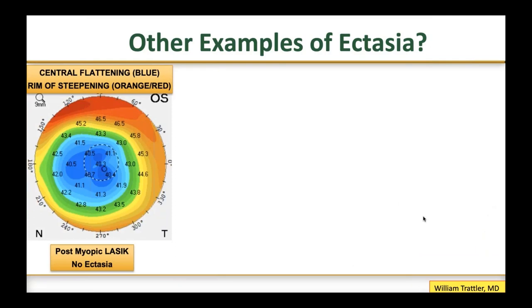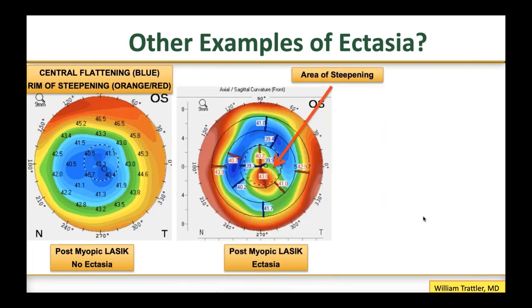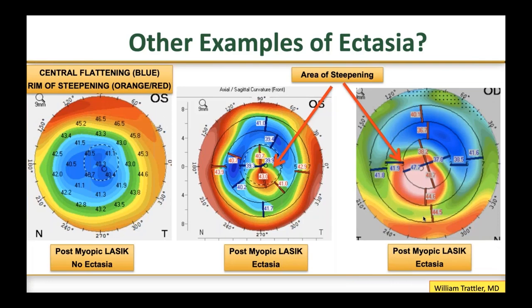Here are more examples of post-myopic LASIK ectasia: on the left you see previous myopic LASIK now with ectasia, and another example centrally where the blue flat area in the 39–40 range suddenly has a 43.0 bulge at the center — that's an area of ectasia. Another example shows this area bulging outwards inferiorly. If you can identify these cases and treat them early, you can really prevent advanced ectasia and preserve a lot of good vision for them.